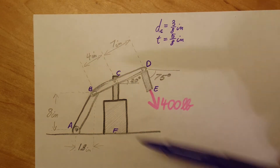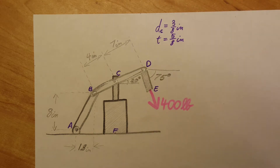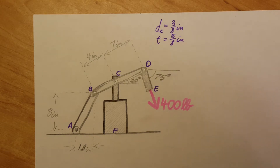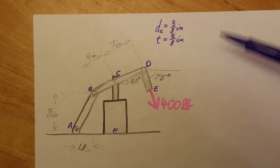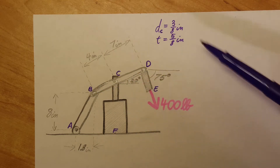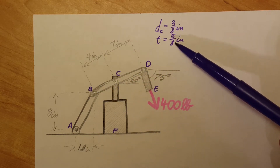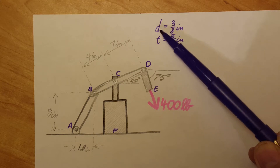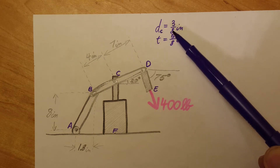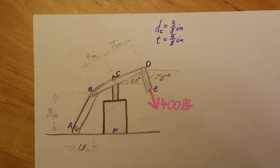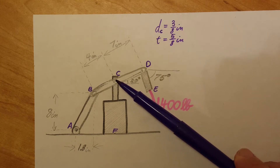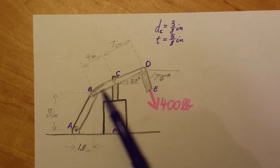In this problem we have a hydraulic cylinder which partially controls the position of rod DE, where we have a 400 pound load and it has been locked in this position. Member BCD is 5 eighths of an inch thick and it is fixed to this cylinder at point C with a pin that has a diameter of 3 eighths of an inch. We need to determine the average shearing stress at point C and the bearing stress at point C in member BCD.